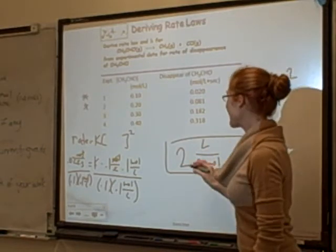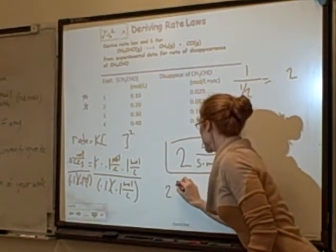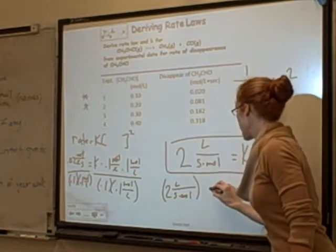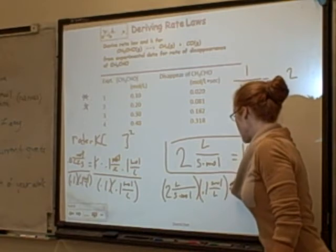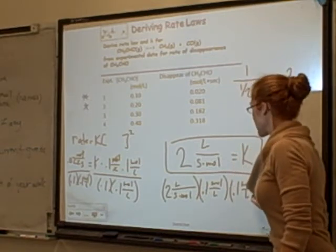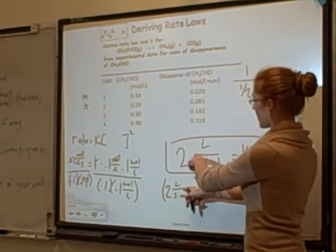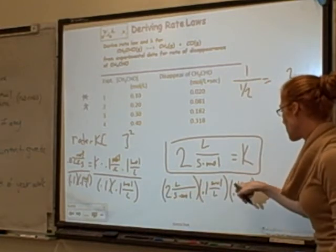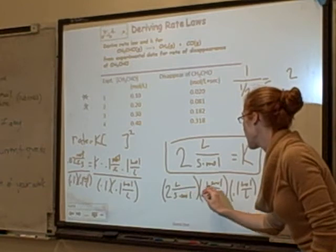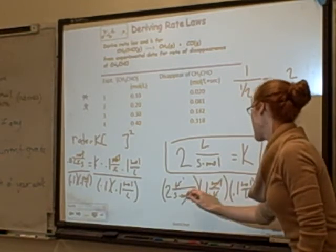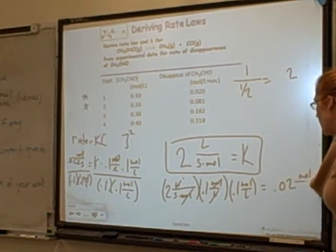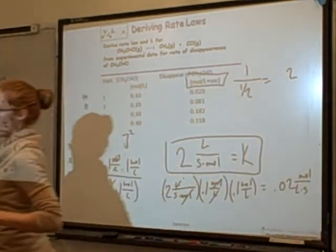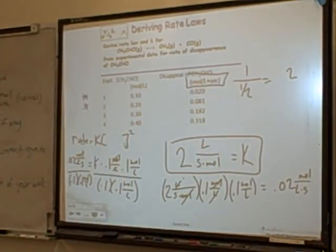I want to verify this, so I'll plug it back in. k is 2 liters per mole per second, times the concentration 0.1 moles per liter, times 0.1 moles per liter — because it's squared. So 2 times 0.1 times 0.1 gives 0.02. For units: mole cancels mole, liter cancels liter, and I'm left with moles per liter per second, which matches the units used for the rate. AP Chemistry loves to ask about units, so always plug them in to verify you got it right.